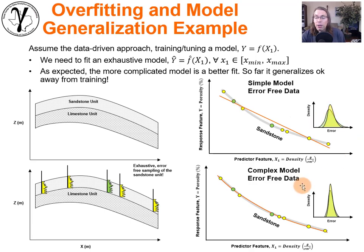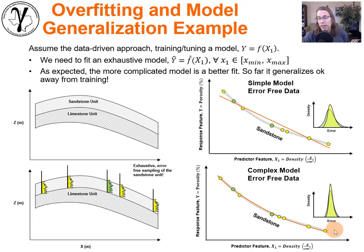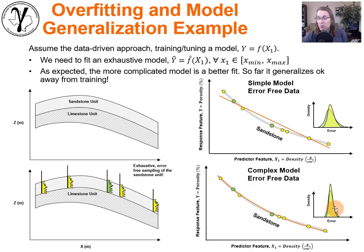Now we could increase the complexity of the model. If we do that, we get a model that's more curvilinear and better able to fit the natural setting. The variance and error in training goes down, and testing error also goes down. A more complicated model is fitting better.